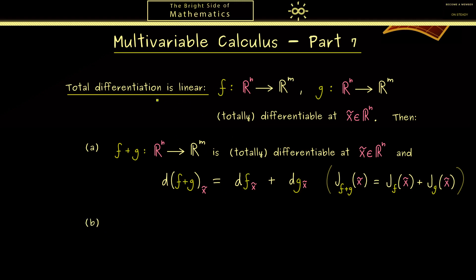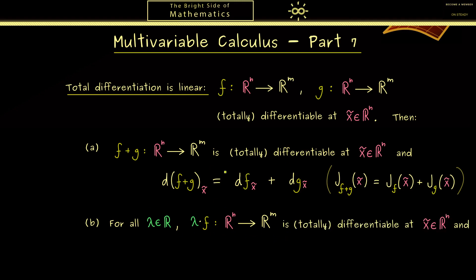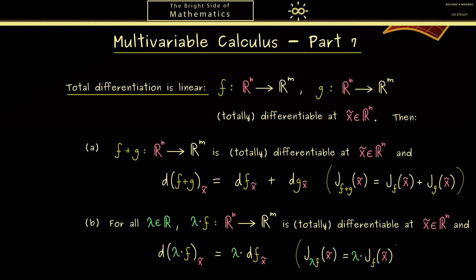The other part of linearity is that we can also pull out scalars. In our case this would be a scalar lambda from R. By having such a factor we can define a new map lambda times f, which is a well-defined map from Rn into Rm. In the same way we get the result that this new function is also totally differentiable at the given point x̃. This new linear map can be described by scaling the old linear map — in other words, you can pull out the scalar. You can also write it with the Jacobian matrices. So the first rule is the sum rule and the second is the factor rule, which you may already know from the one-dimensional case.